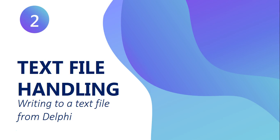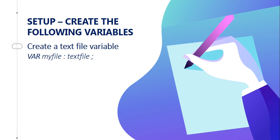So let's start with the first step. Whenever we want to put information from Delphi into a text file, we need a couple of variables — maybe a few strings. But the most important one is you'll need your text file variable. You don't need to have a string, but you can. The most important one is you must have your text file variable, which we will be using 'myFile' in this example.